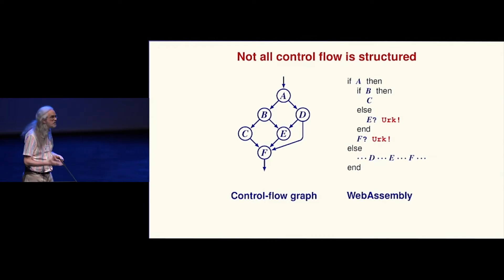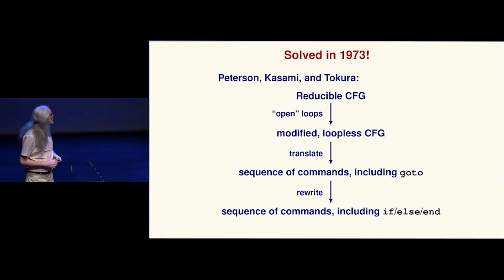I solved it by going to the library, because I remembered in the late 60s and early 70s, people—the structured programming thing was new—were very obsessed with what it could do. There's this very deep technical paper by Peterson, Kasami, and Tokura that has a whole bunch of results about what kind of flow graphs you can translate and how it works. In the process they solve this problem.